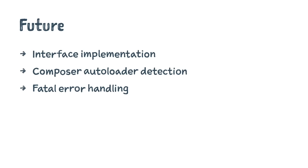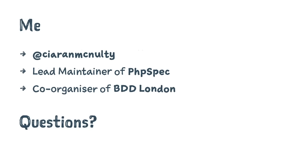Areas for future work include automating the step where a class needs to implement an interface, fixing autoloader configuration replication, and handling PHP 7 fake layers in the testing tool. The speaker is Kieran McMonagle, lead maintainer of PHPSpec and co-organizer of BDD London meetup.